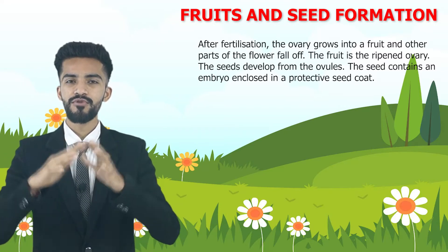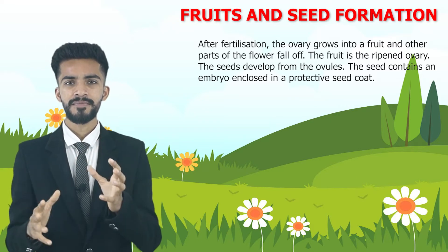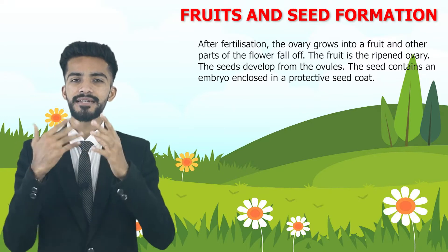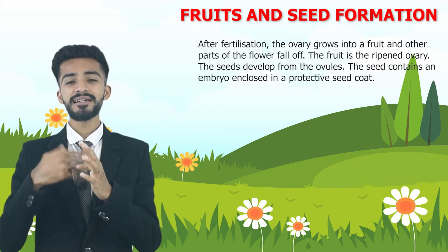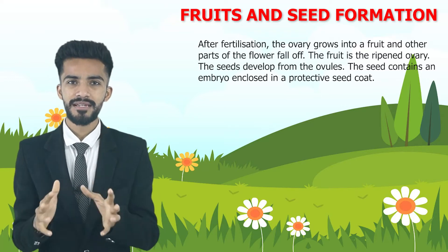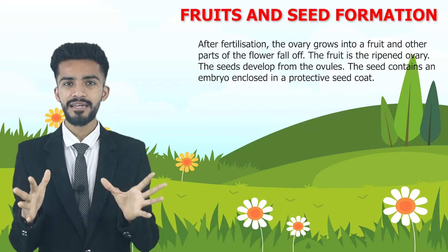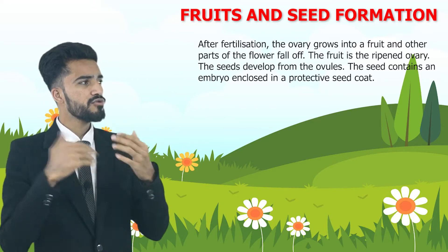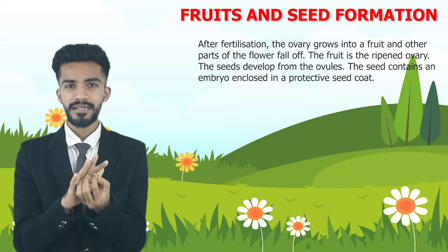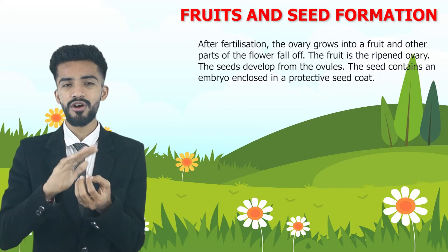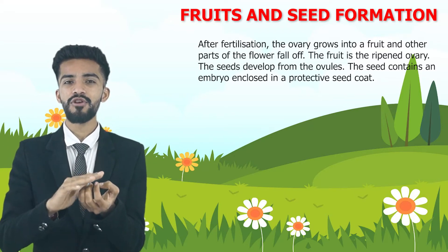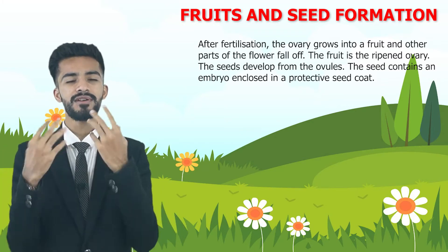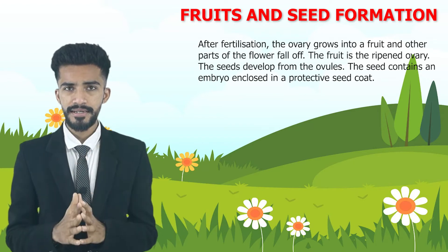And after that, the other parts of the flower will fall off. You must have seen this — whenever a fruit forms, before that flowers come on the plant. Like in summer season, if anyone has seen a mango plant — before summer, during the ending of winter, white white colored flowers appear. Most of those flowers fall down, and from some flowers mango forms. Mango forms from inside that flower only, just as it is written here: the ovary grows into a fruit and the other parts of the flower fall off.